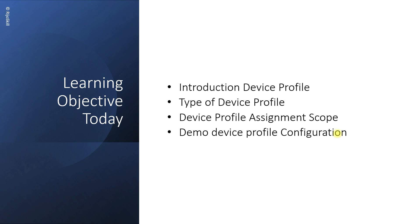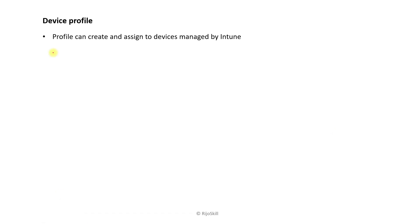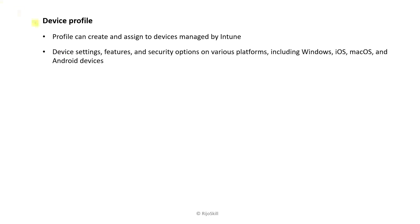What is a device profile? A profile can be created and assigned to devices managed by Intune. You are already familiar with on-premises Active Directory — once you create your device you implement policy using GPO. The same concept applies here with Intune device configuration profile. You can configure settings, features, and security options for various platforms including Windows, iOS, macOS, and Android.